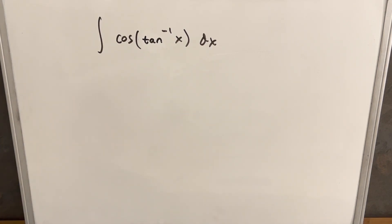Hey we have here the integral of cosine tan inverse x dx. I'm going to solve this one using two methods. We're going to do the short way and then the shorter way.